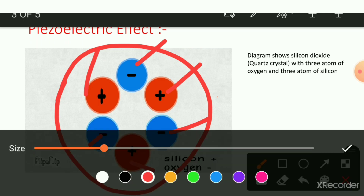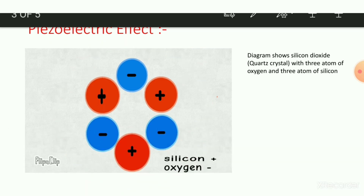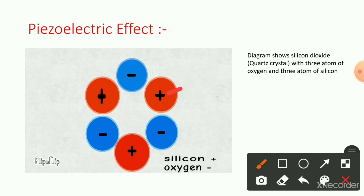You know how voltage is generated — when two opposite charges, positive and negative, exist separated by some distance, then voltage is generated. In this case, we see the positive charges and the negative charges. They appear mixed, so we take the average position of the positive charges and the average position of the negative charges.